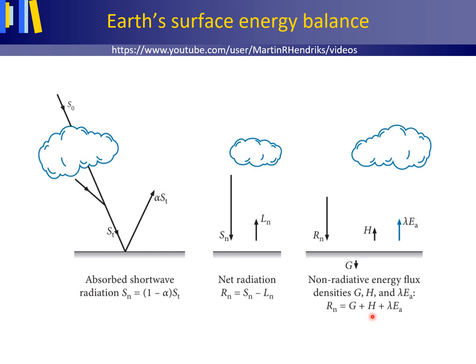and or latent heat transfer, which is evaporation from the Earth's surface, lambda EA. G, H, and lambda EA are all expressed in megajoule per square meter and per day and are assigned a positive value when directed away from the surface.